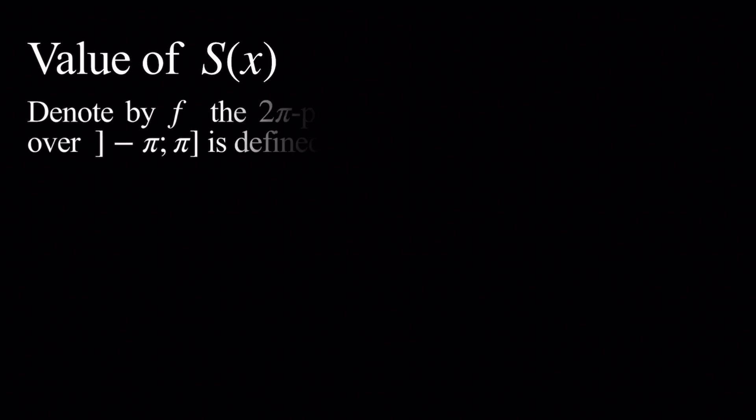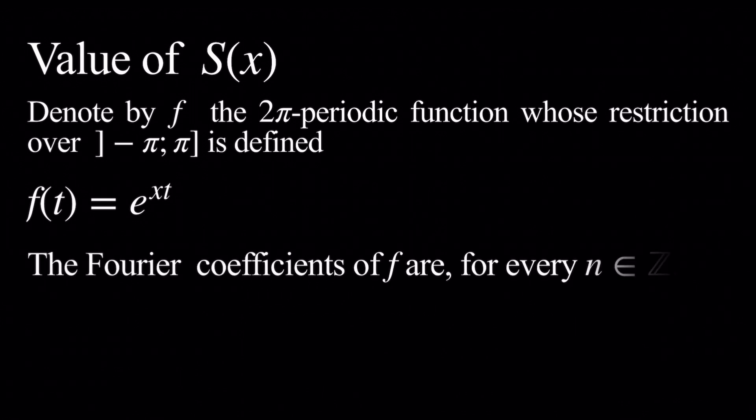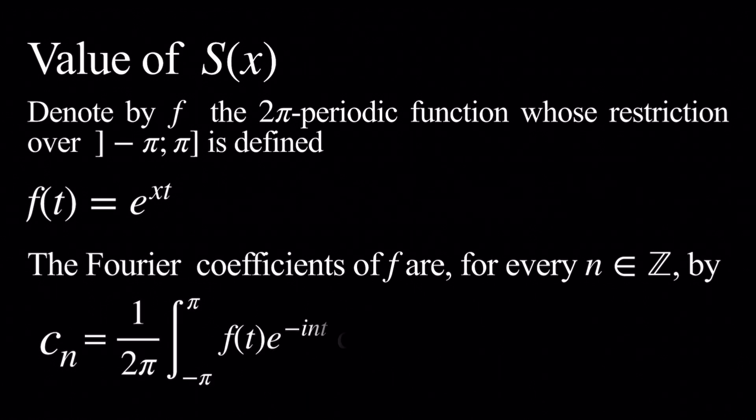We're going to consider a function f that is 2π-periodic, and whose restriction on the interval negative π to π is defined by f of t equals e to the x t. Here, x is the number that appears in the definition of our first series. We want to find the Fourier coefficients of this function. They are given by the formula: c sub n equals 1 over 2π times the integral from negative π to π of f of t times e to the negative i n t dt.